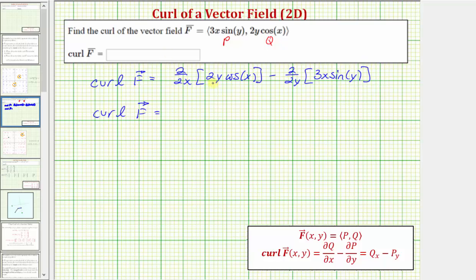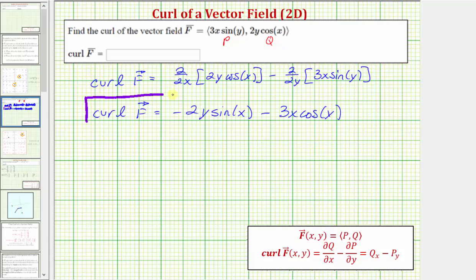The partial of two y cosine x with respect to x would be two y times negative sine x, or negative two y sine x, minus the partial of three x sine y with respect to y, which would be three x times cosine y. This doesn't simplify, and therefore this is the curl of the two-dimensional vector field.